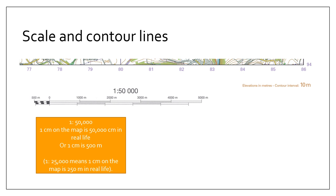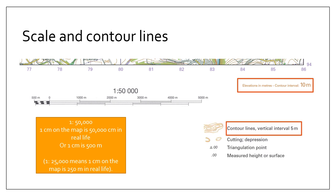Another thing to identify is the contour line interval. On this particular map it's 10 meters, and it might be written directly underneath the map or you might need to find it in the key. On another map, the gap between each contour line might be 5 meters. That's very useful when you're drawing the cross-sectional area onto your map, so you know exactly what the smaller contour lines are worth.